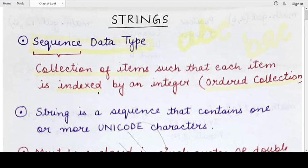We also say that each item is indexed by an integer. Every item will have an index which is the position at which that particular value or item is present in that sequence data type. As I just specified, if the string is 'abc', then 'a' is at the first position, 'b' is at the second position, and 'c' is at the third position.